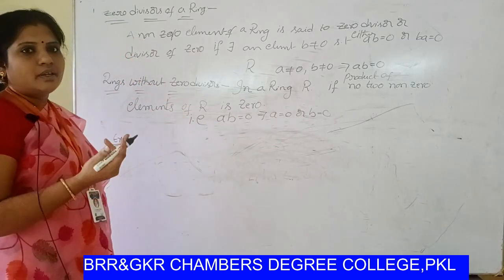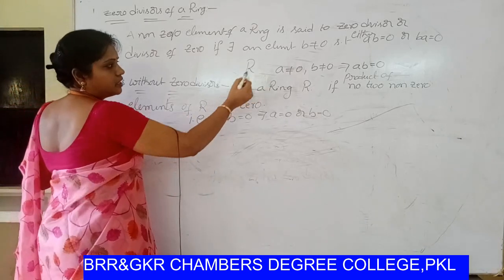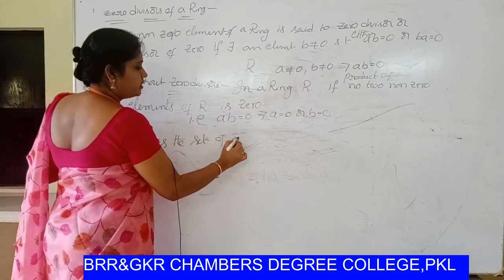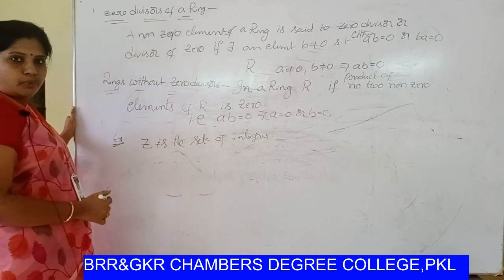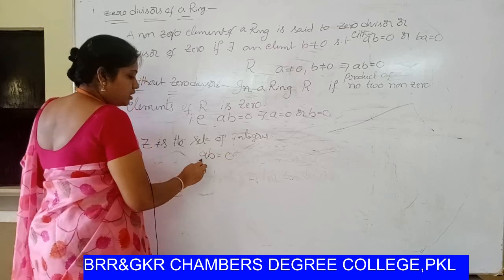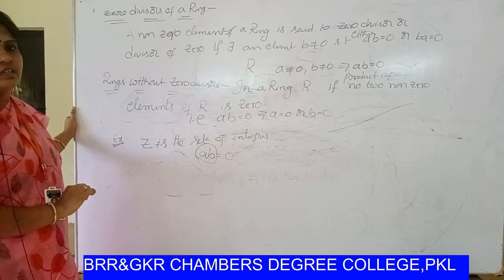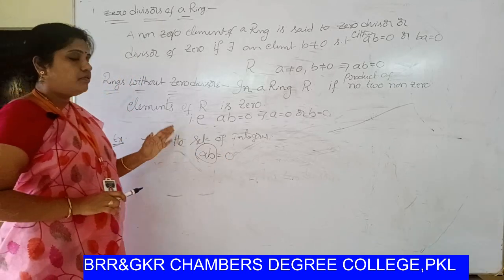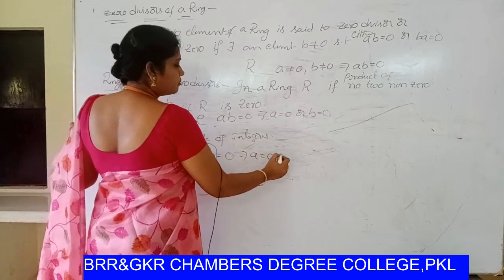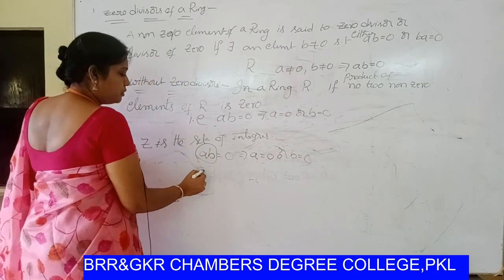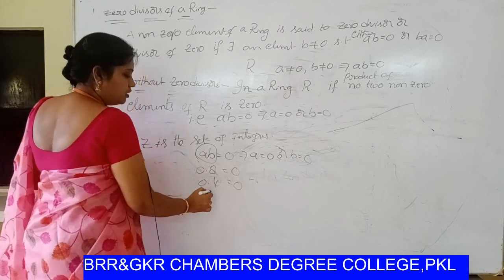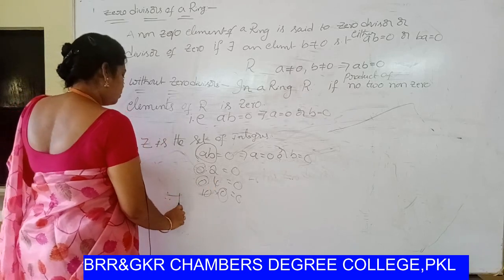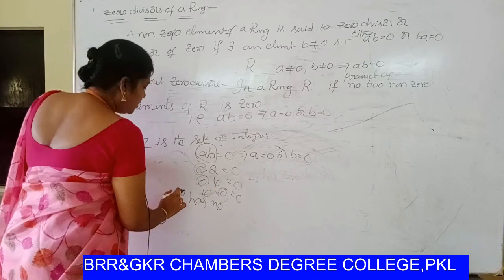The set Z, the set of integers: if we take any two numbers and their product ab equals zero, then in usual multiplication one of these two numbers must be equal to zero. We know that in usual multiplication, the product of two numbers equals zero, then one of them must be equal to zero. For example, zero times two equals zero, zero times four equals zero, ten times zero equals zero. So one of these two elements must be equal to zero. Therefore Z has no zero divisors.